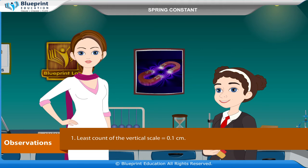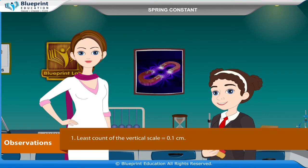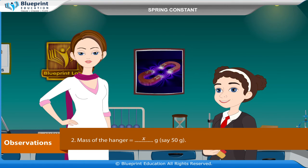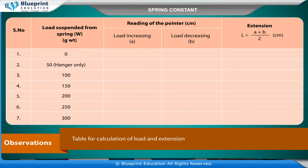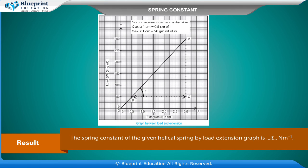Observations: Least count of the vertical scale is equal to 0.1 cm. Mass of the hanger is equal to x gram, say 50 gram. Mass of each slotted weight is equal to x gram, say 50 gram. The table records load suspended from the spring (W in grams), pointer reading for load increasing (A) and load decreasing (B) in centimeters, and extension L = (A + B) / 2 in centimeters, for loads of 0, 50 (hanger only), 100, 150, 200, 250, and 300 grams. Result: The spring constant of the given helical spring from the load-extension graph is x newton per meter.